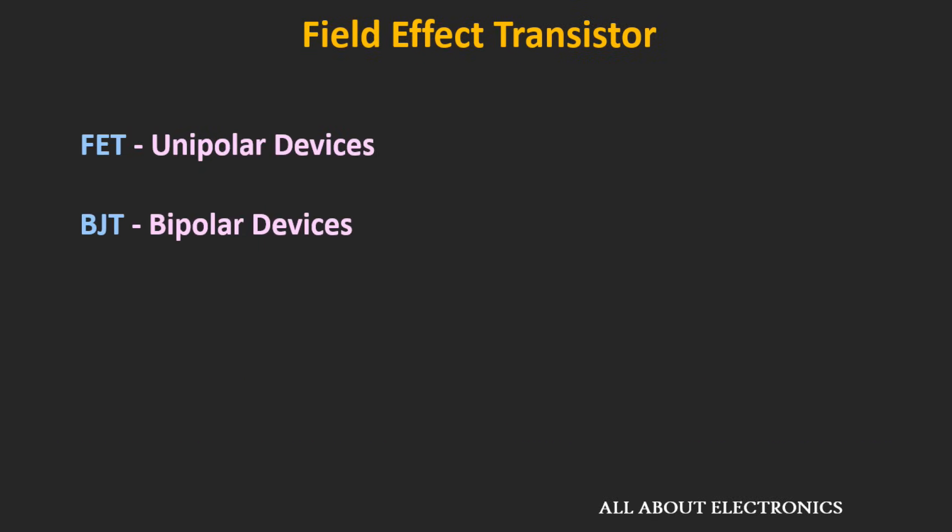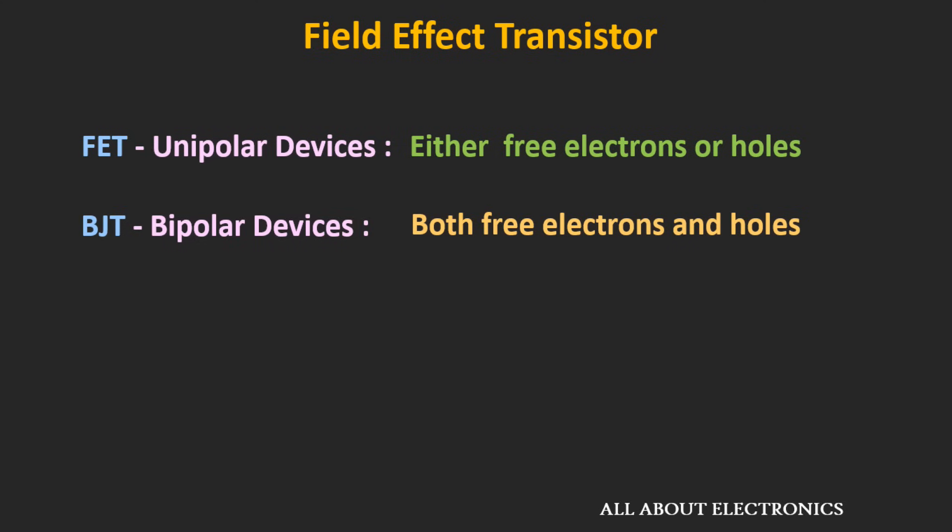The second difference is the FET is a unipolar device, while the BJT is a bipolar device. Meaning that the BJT relies on two types of charges — free electrons and holes — but the operation of the FET relies on either holes or electrons.